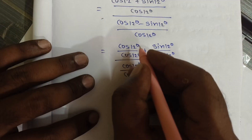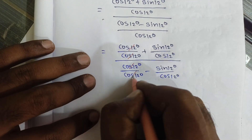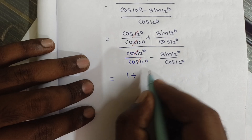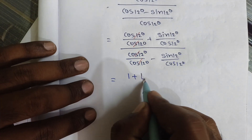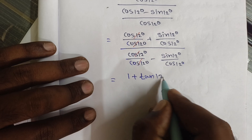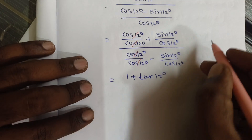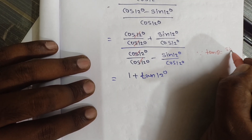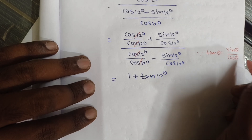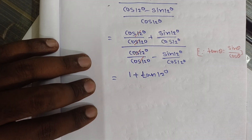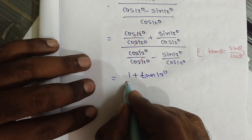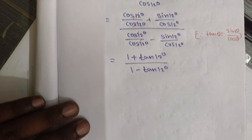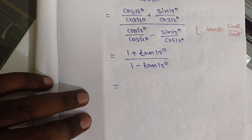So this becomes 1 plus tan 12 degree, divided by 1 minus tan 12 degree.